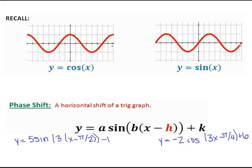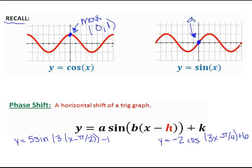Before we dive into phase shifts and tangents, let's do a little recall from 10.1. Cosine graphs always start at a maximum — we can call that a max — and on the parent graph, that max happens to be at (0, 1). Whereas the sine graph always starts at the origin. That's the big difference between the two, and we're going to have to remember that.